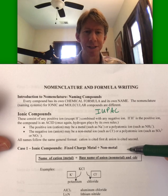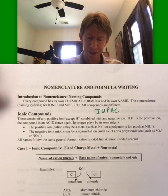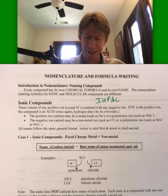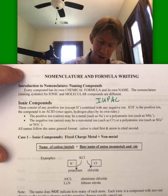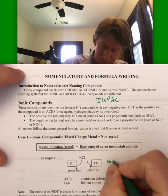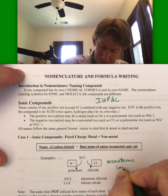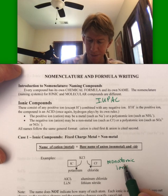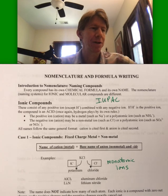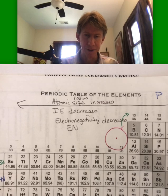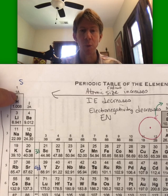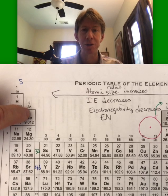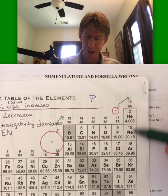We're going to look at Case 1, which is ionic compounds with a fixed-charge metal plus a nonmetal. The name is just going to be the name of the cation plus the base name of the anion plus -ide. As an example, we've got potassium ion and chloride ion here — these are what I call monatomic ions, meaning one-atom ions. Looking at your periodic table, all ions in Group 1 are plus one, and all ions in Group 2 are plus two.